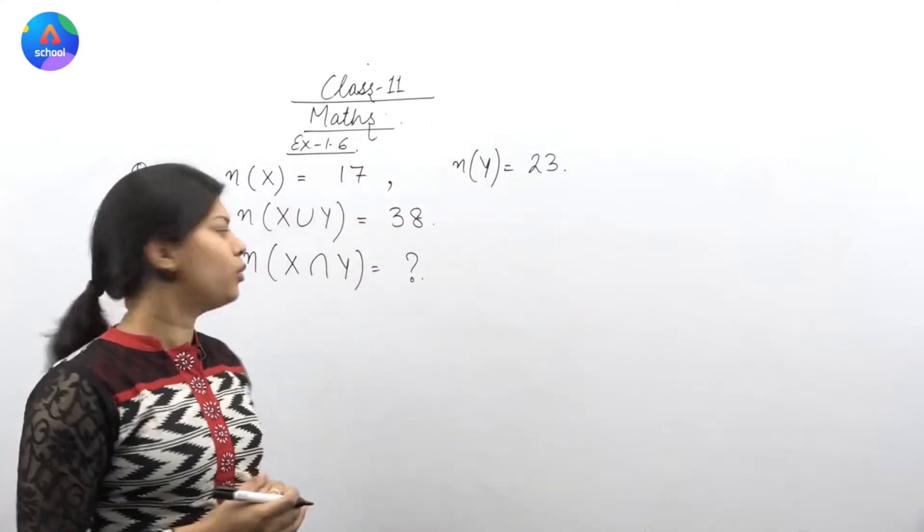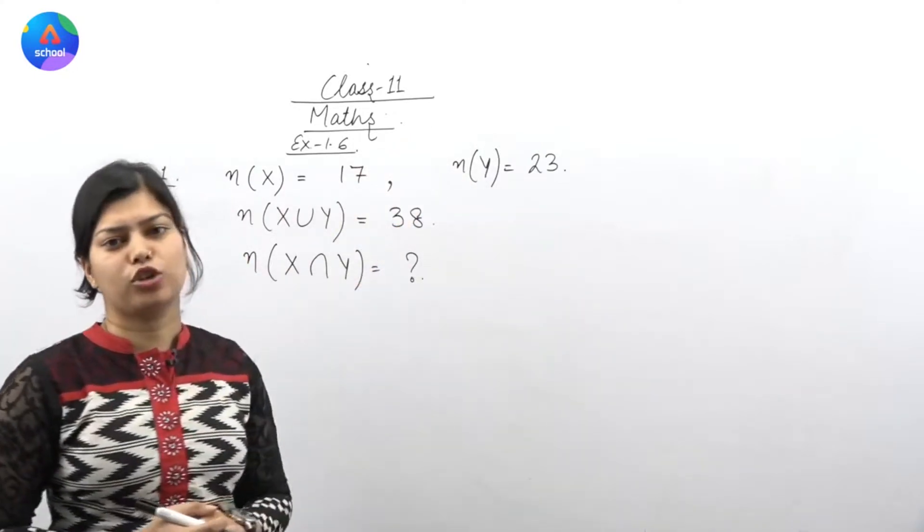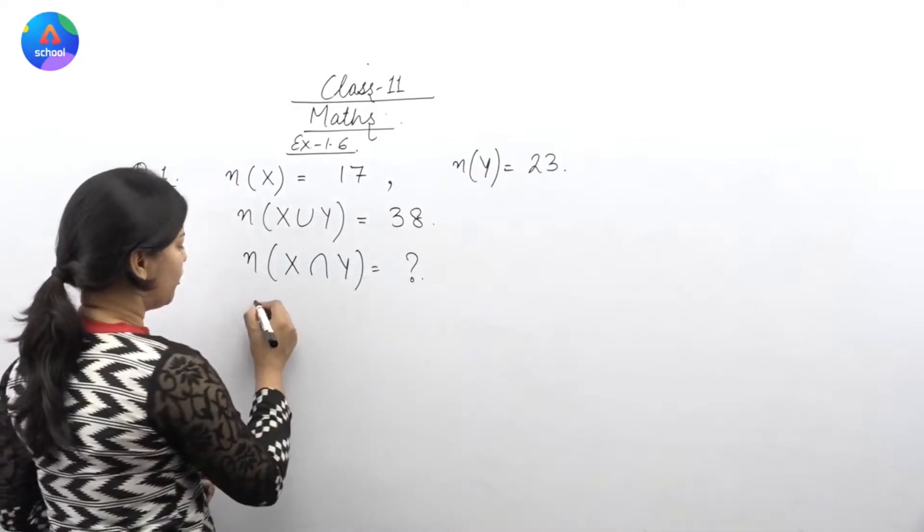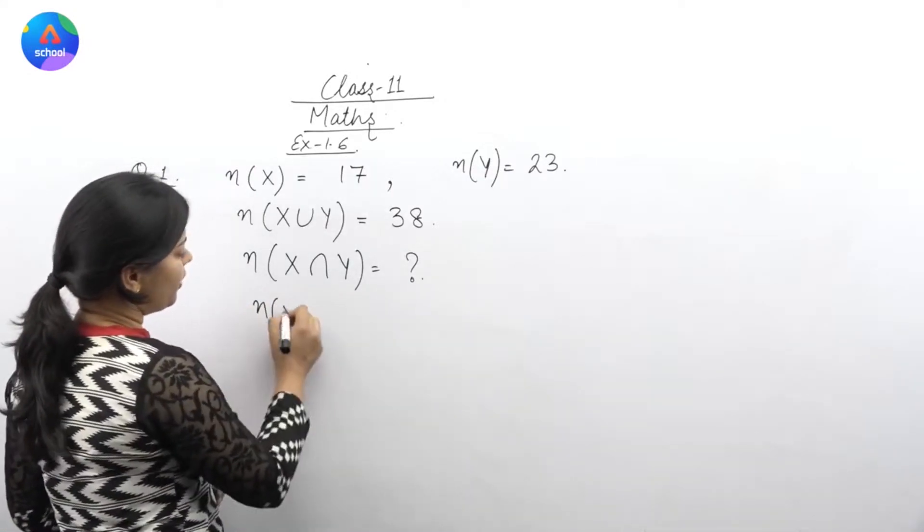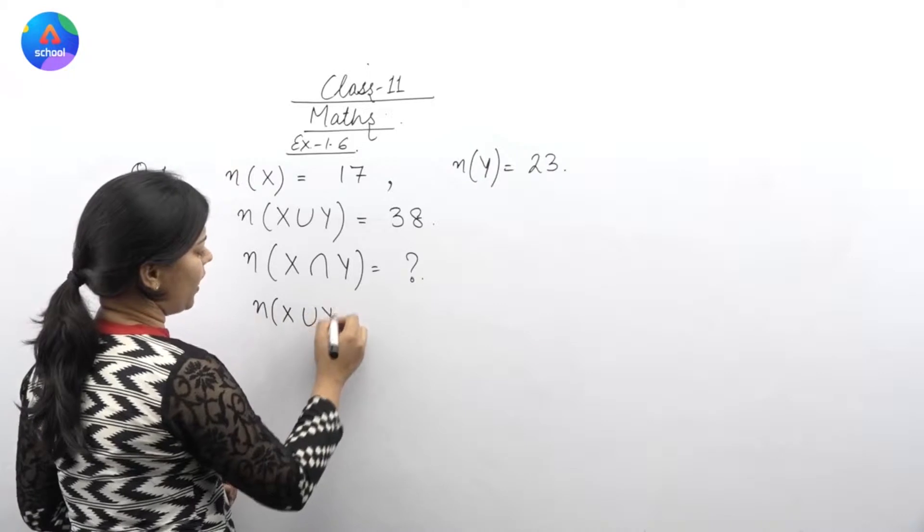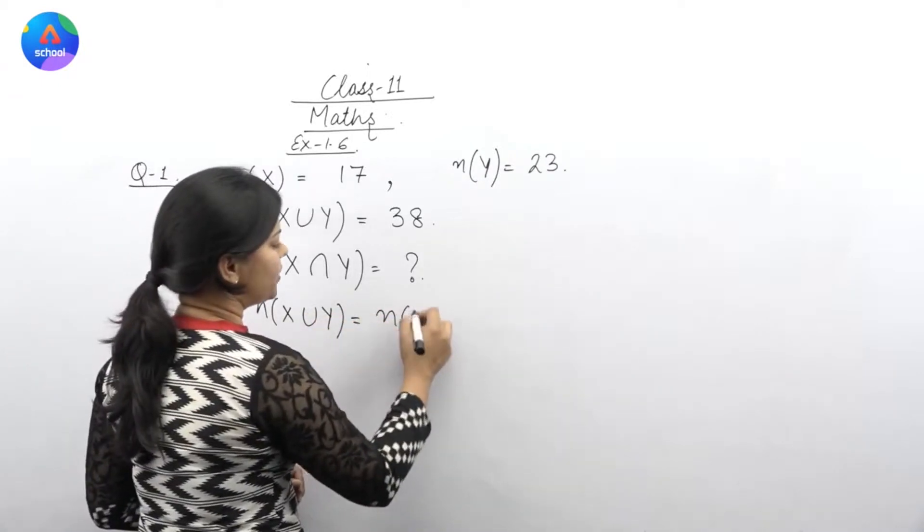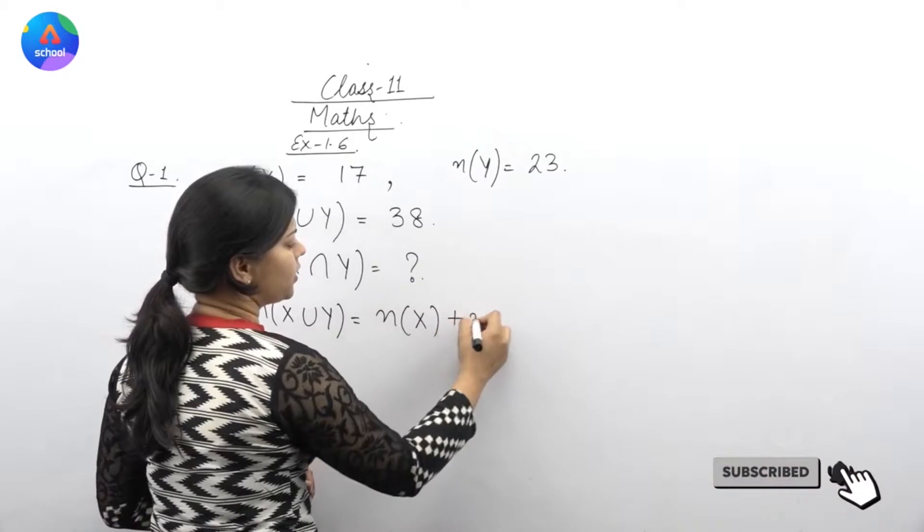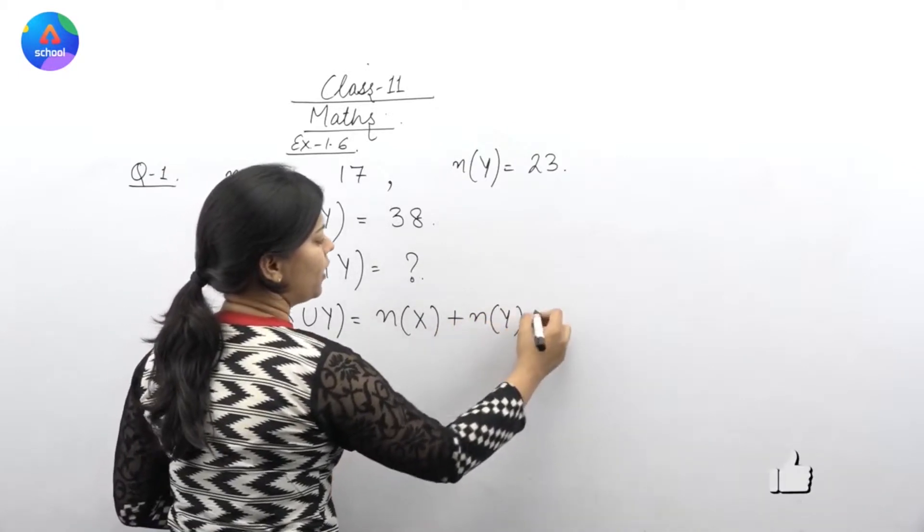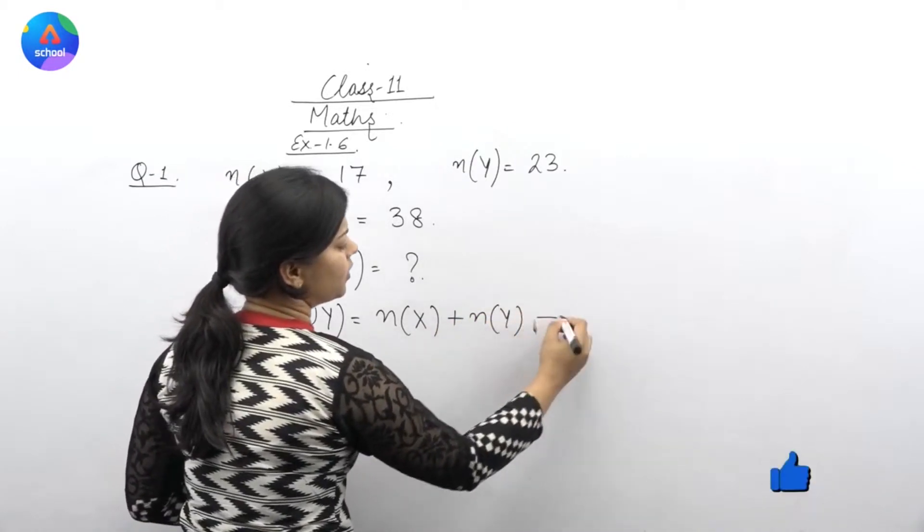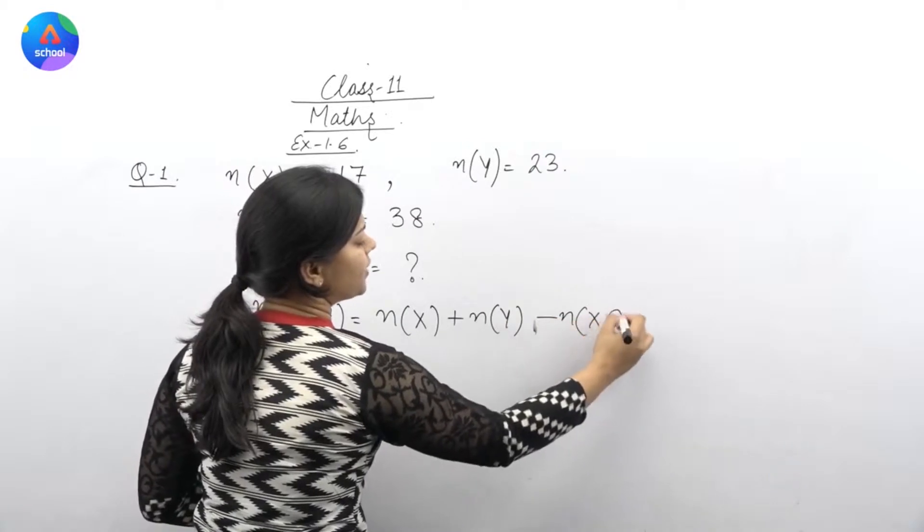Number of elements in X union Y is equal to number of elements in X plus number of elements in Y minus number of elements in X intersection Y.